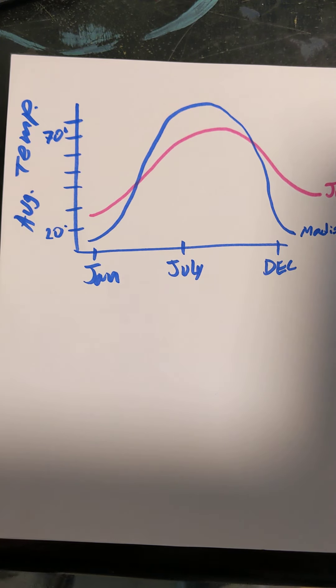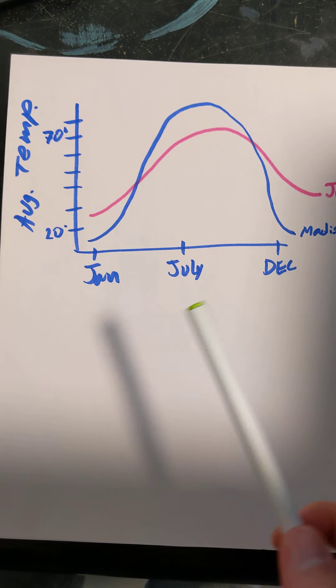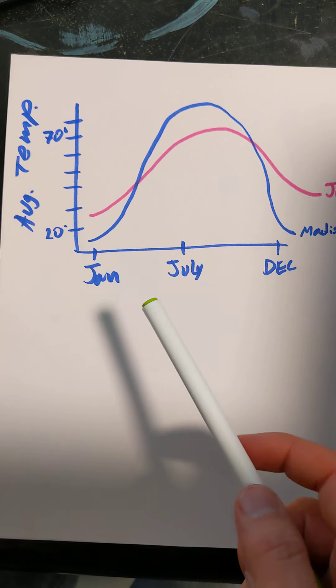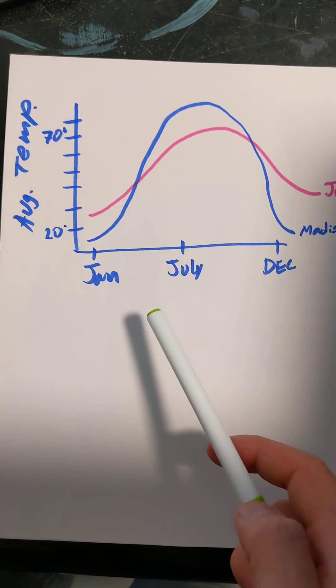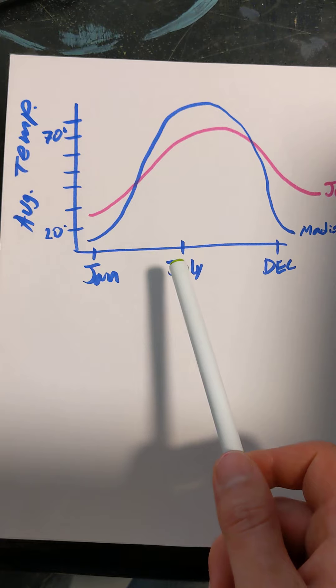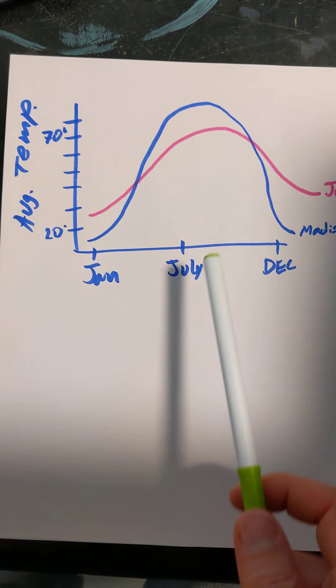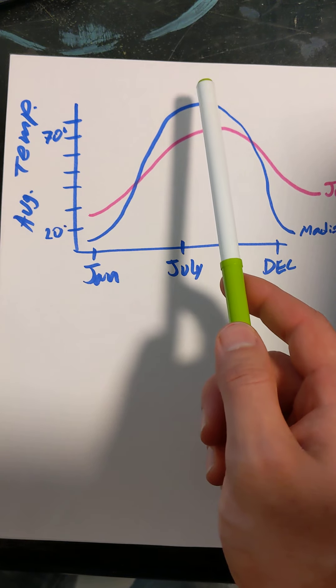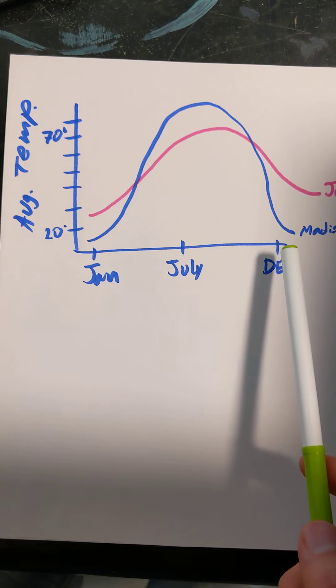All right. So let's talk about similarities first. Both cities have the same pattern. The average monthly temperatures throughout the year. More specifically, both cities are colder in the winter months, January and December, at the beginning and end of the year, and warmer in the summer months during the middle part of the year.